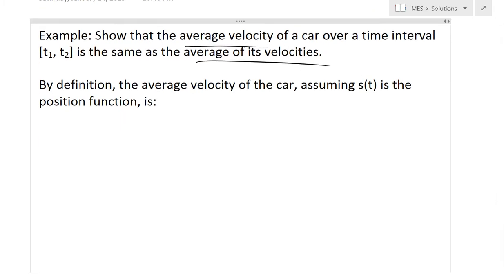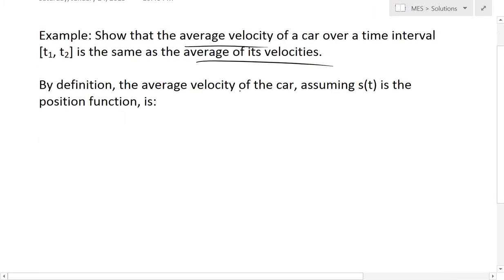Now to do this first, let's just look at the definition. Well, by definition, the average velocity of the car, assuming s(t) is the position function, is just going to be average velocity equals delta s over delta t.